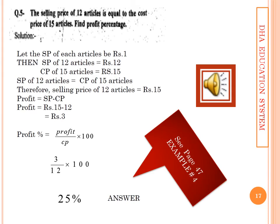Question 5: The selling price of 12 articles equals the cost price of 15 articles. Assume the sale price of each article is rupees 1, so SP of 12 articles = 12 and CP of 15 articles = 15. Since SP of 12 = CP of 15, consider the larger value as the sale price. Profit = SP minus CP = 15 minus 12 = 3. Profit percent = profit over CP into 100, giving the final answer.